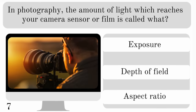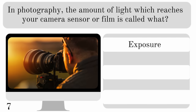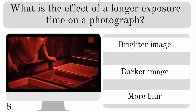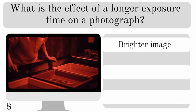In photography, the amount of light which reaches your camera sensor or film is called what — exposure, depth of field or aspect ratio? The correct answer is exposure. So what is the effect of a longer exposure time on a photograph? Does it produce a brighter image, a darker image or more blur? It produces a brighter image.